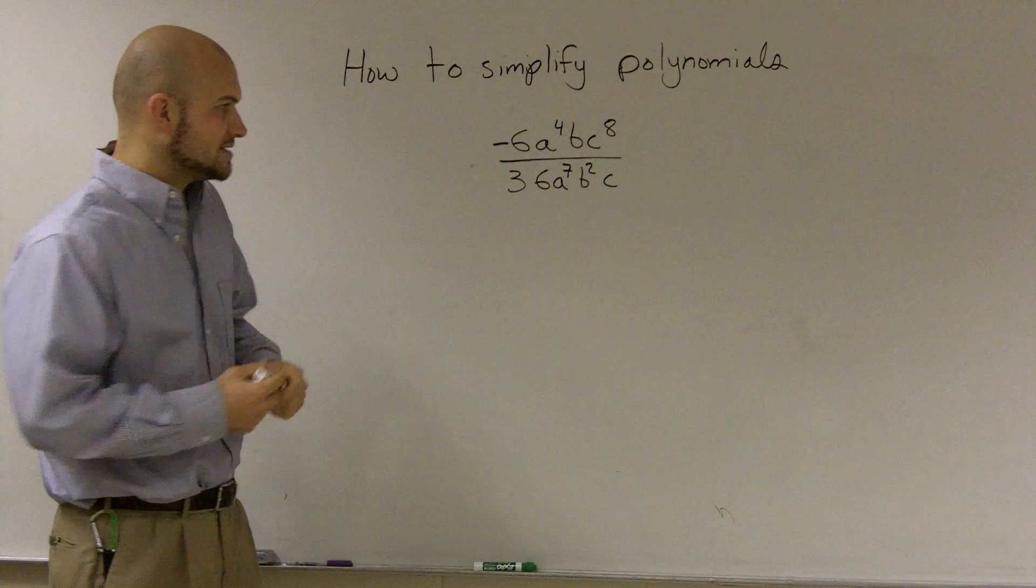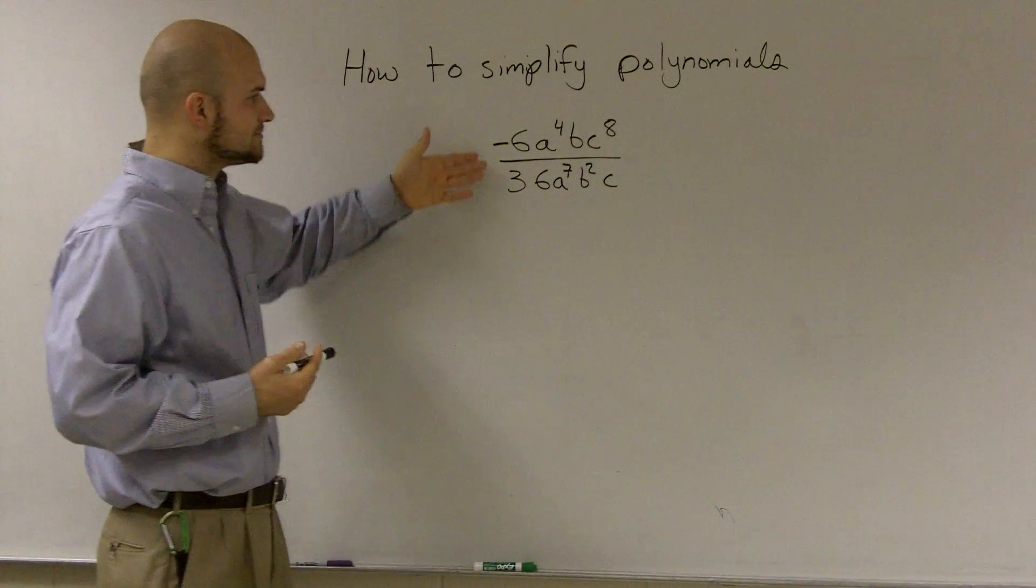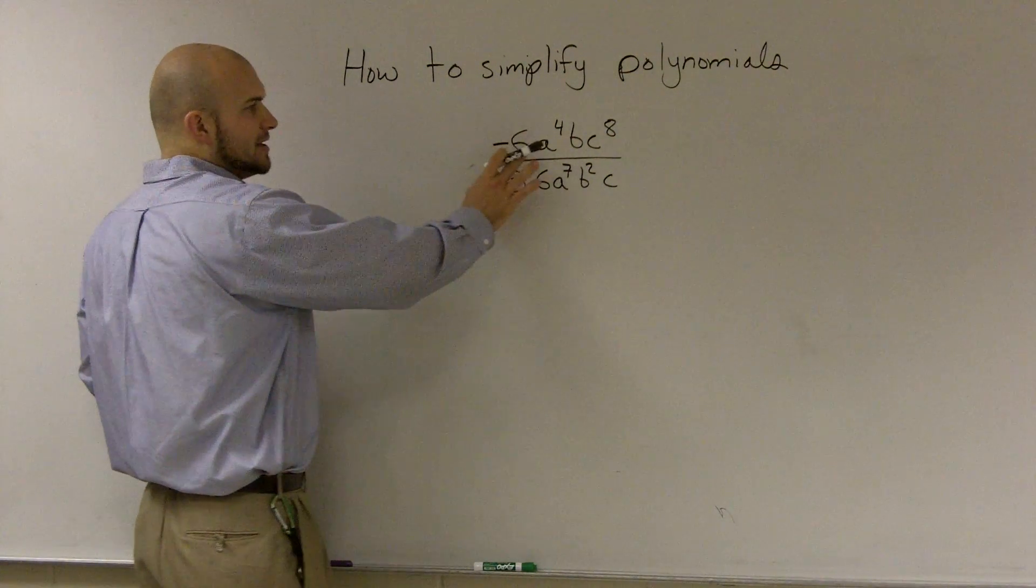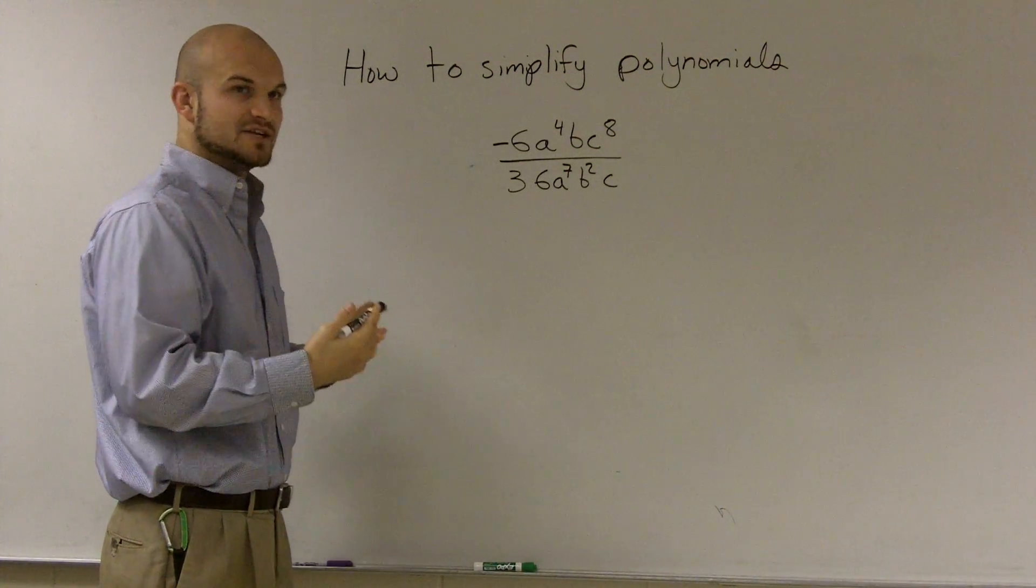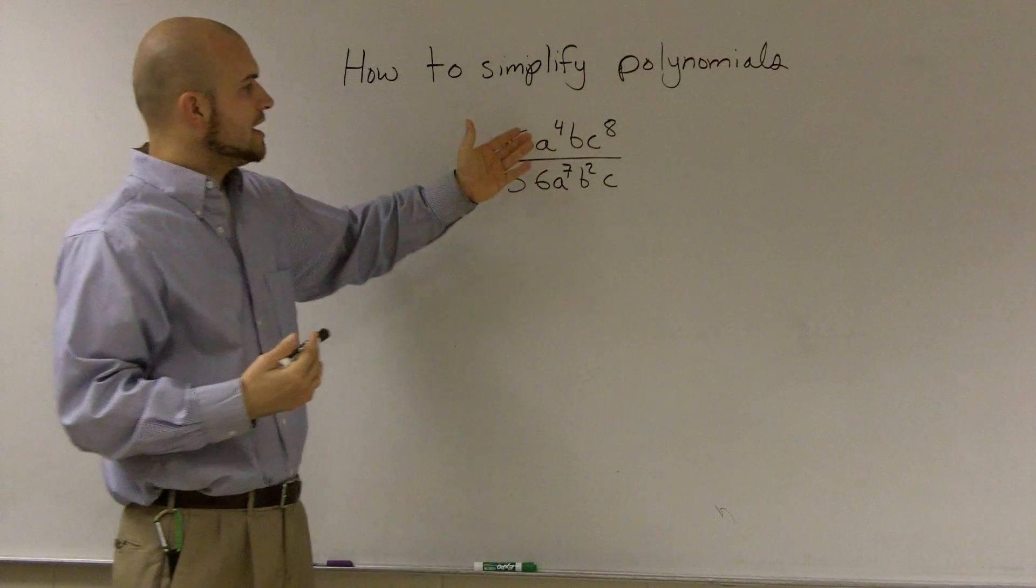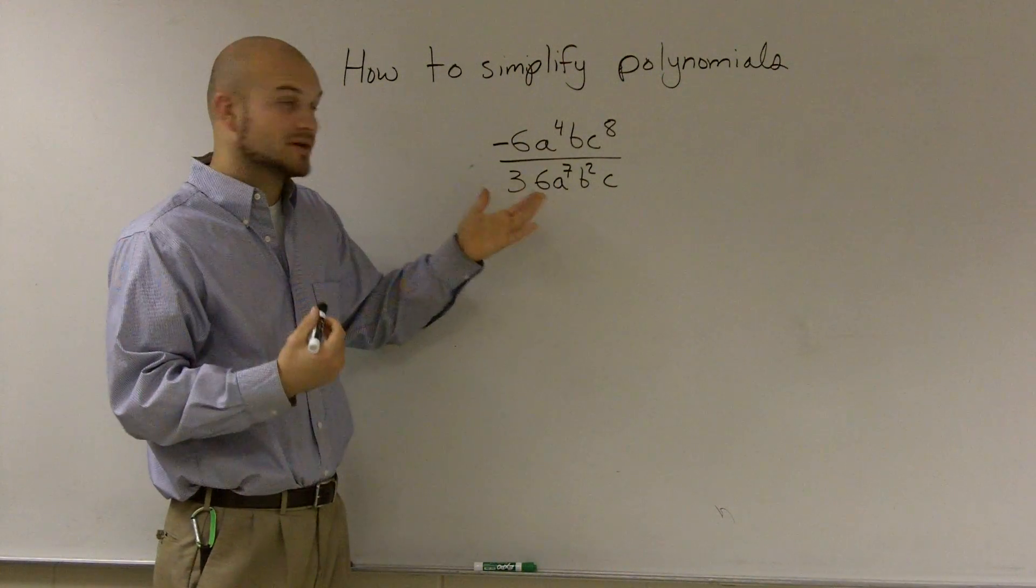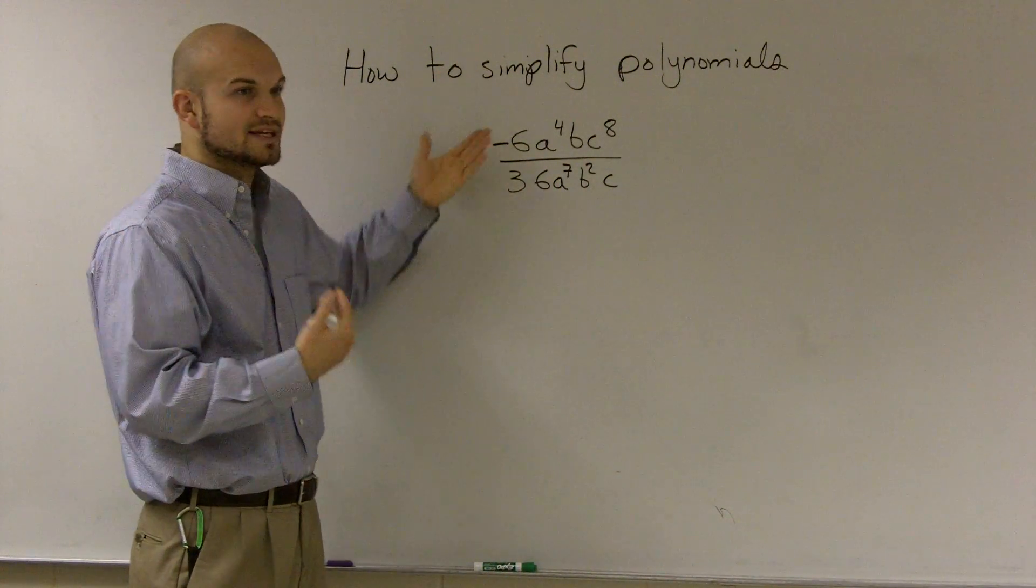So what we need to do is simplify this. What I'm going to do is simplify each and every term. I have my numbers, my a's, b's, and c's. I'm just going to break them down and simplify each one. Because once we can simplify them, I can make this into a monomial. It's not a monomial yet because everything has not been simplified.